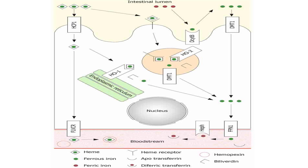Iron must be carried on a protein in the circulation, which is transferrin. To be carried on transferrin, iron must be in the ferric form. Therefore, iron must be converted from ferrous to ferric form after passing through ferroportin. This task is performed by hephaestin, which is found on the basal border of the intestinal cells and oxidizes iron to the ferric form.